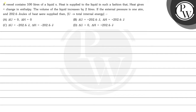Hello, let's read this question. A vessel contains 100 liters of a liquid X. Heat is supplied to the liquid in such a fashion that heat given is equal to change in enthalpy. The volume of liquid increases by 2 liters. If the external pressure is 1 atm and 202.6 joules of heat were supplied,